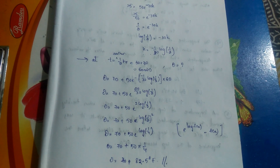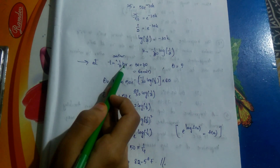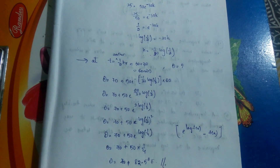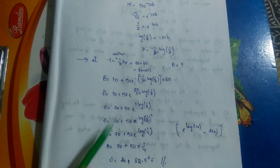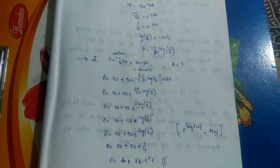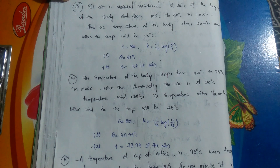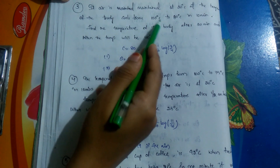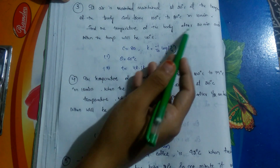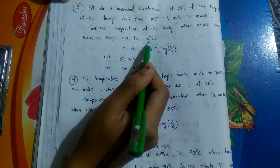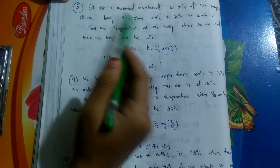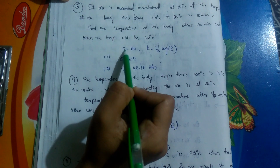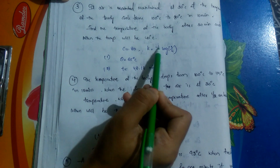So the temperature after another half an hour is 82.5°F. This is a somewhat tricky problem — you need to understand that 'another half an hour' means 30 + 30 = 60 minutes total, not just 30 minutes. Now let's look at three practice questions with answers for you to solve on your own. First: if air is maintained at 20°C and a body cools from 100°C to 80°C in 10 minutes, find the temperature after 20 minutes and find the time when temperature will be 40°C.